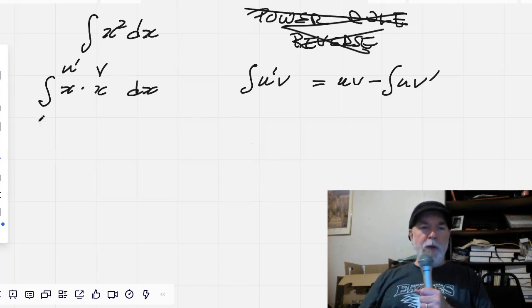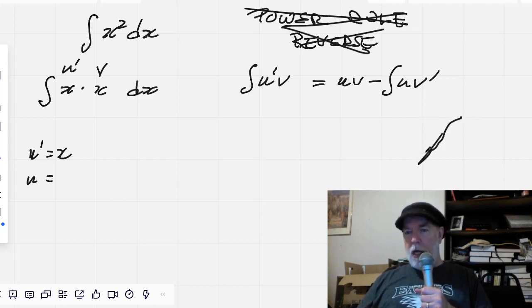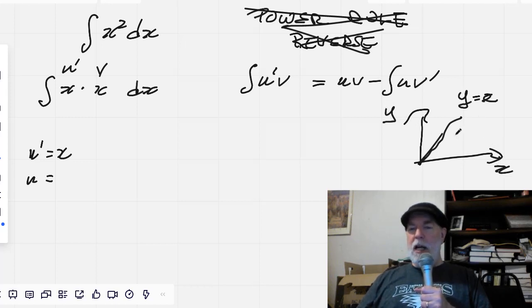All right, so if u prime equals x, what's u going to be? Well, that's going to be the area under the y equals x curve, which is easy to do without integration. Here's our graph. That's y, that's x, and this is y equals x. And let's say that this is our x here. When x equals x, then y also equals x. So we have a triangle.